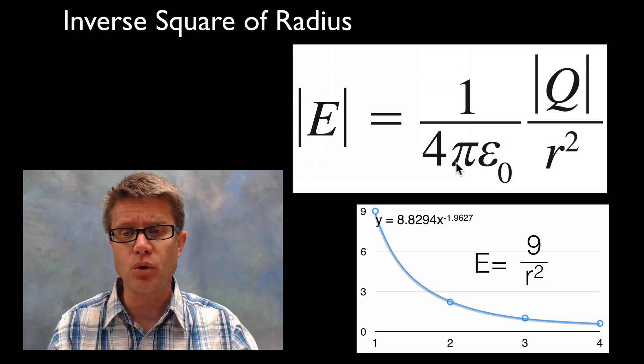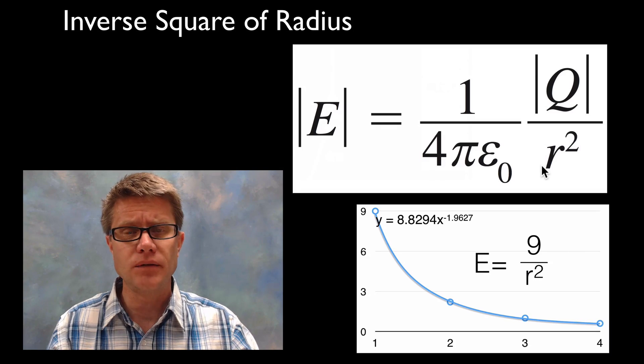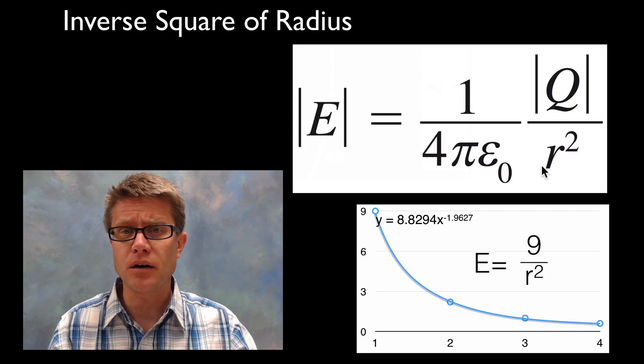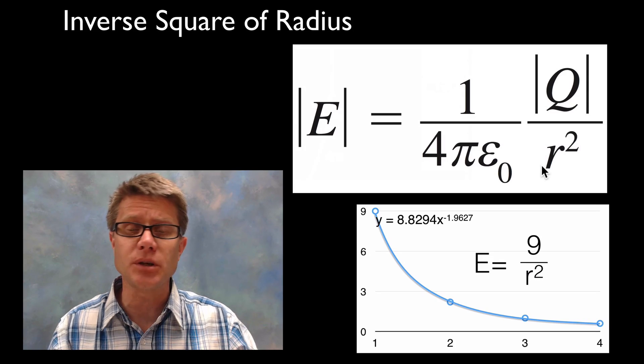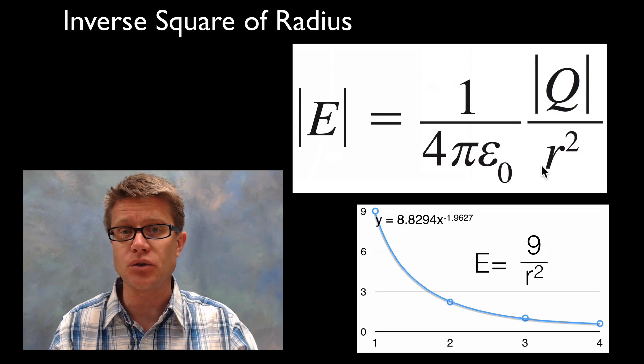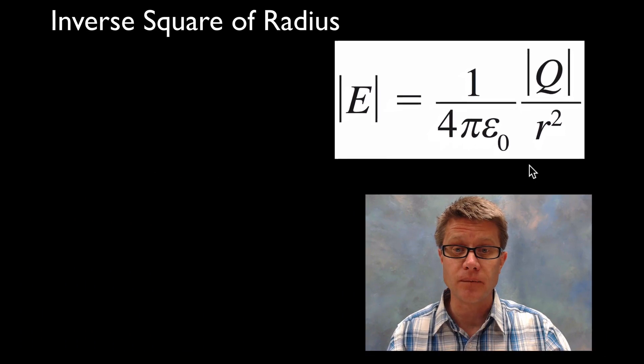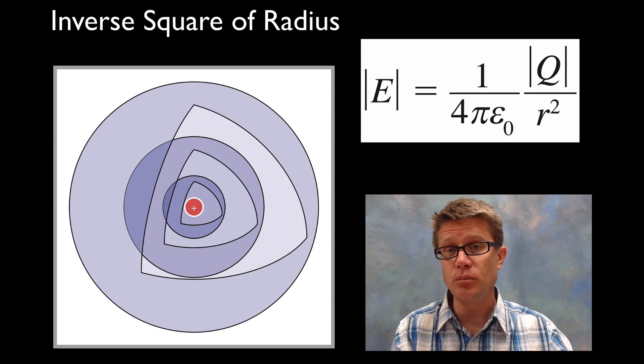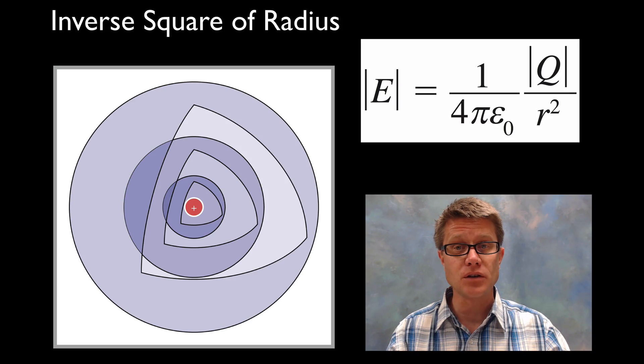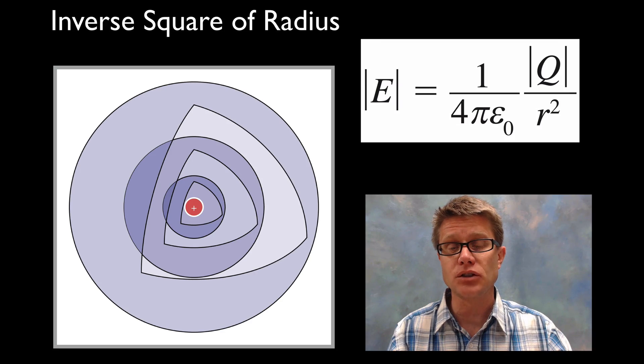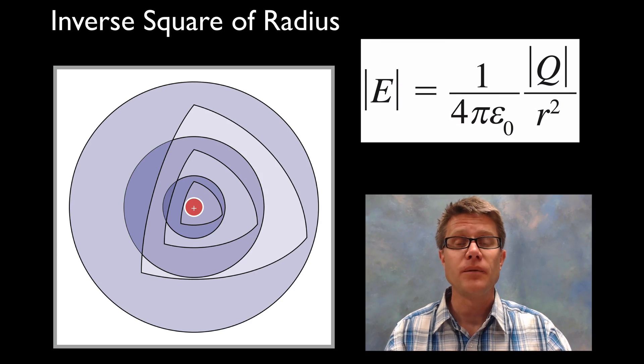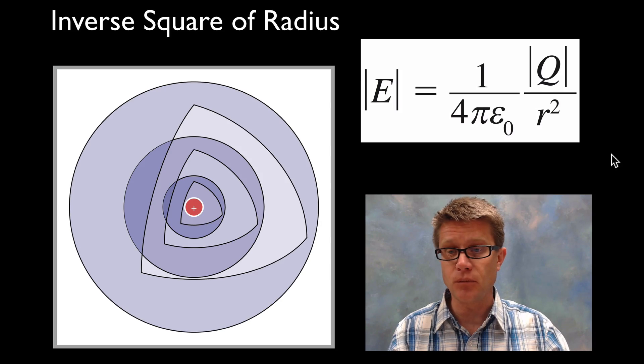But where is this part coming from? 4πr². Have you ever seen that before? Well if you have ever taken a geometry class, you know that 4πr² is the surface area of a sphere. And so this starts to make sense. As we move out in three dimensions, we are decreasing that electric field strength as a function of the area of a sphere. And that is where it is coming from.